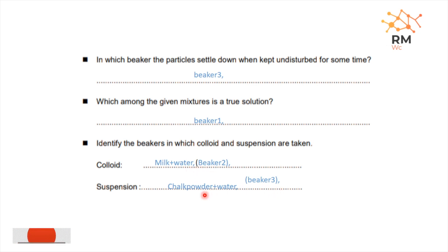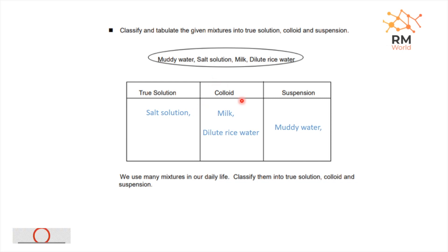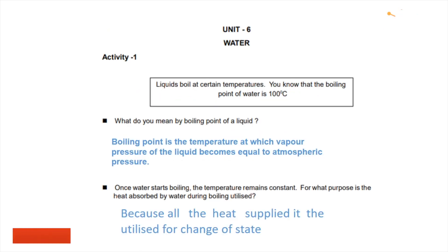In this example, the true solution is the salt solution. Colloid is milk and diluted rice water. Suspension is chalk and water. This leads into Unit 6, which is related to water.